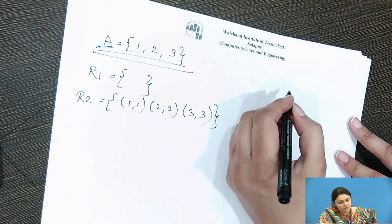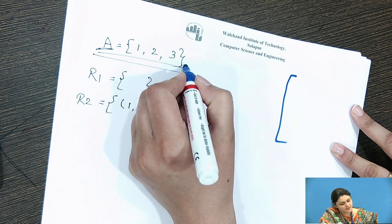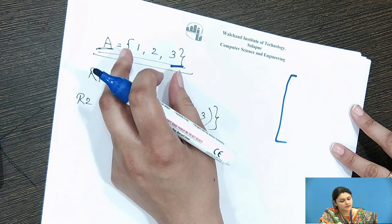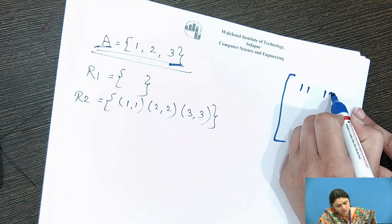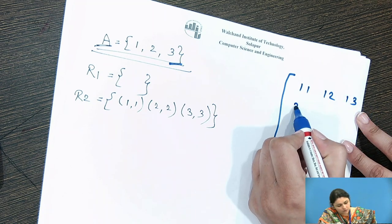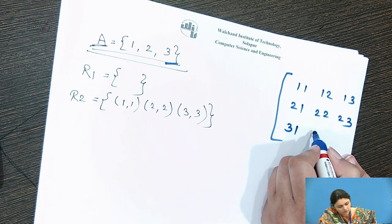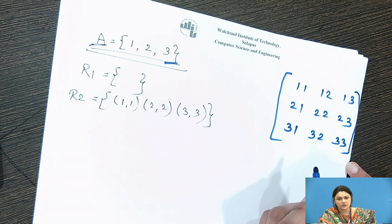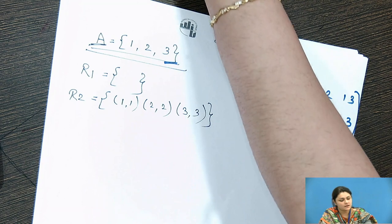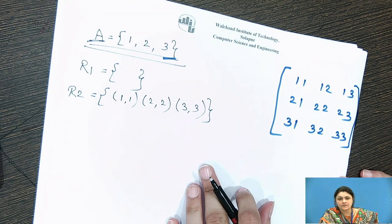Now I will give a more clear example. Consider set A = {1, 2, 3} with three elements. We can represent all possible ordered pairs as: (1,1), (1,2), (1,3), (2,1), (2,2), (2,3), (3,1), (3,2), (3,3). This is nothing but the matrix of all ordered pairs.